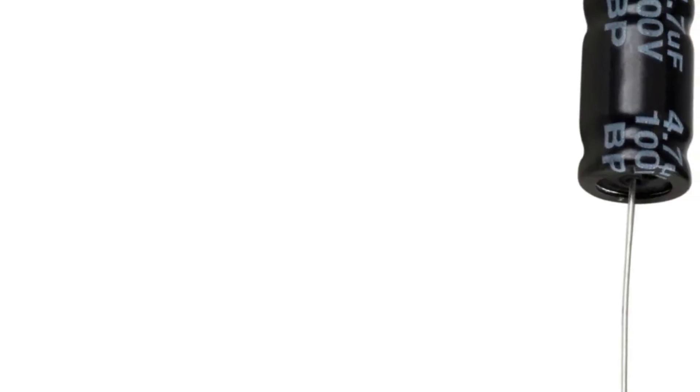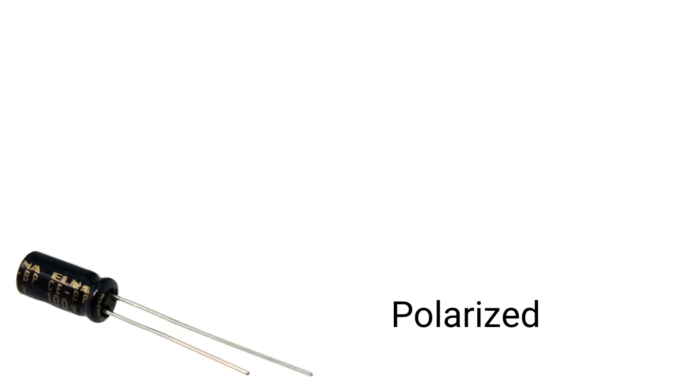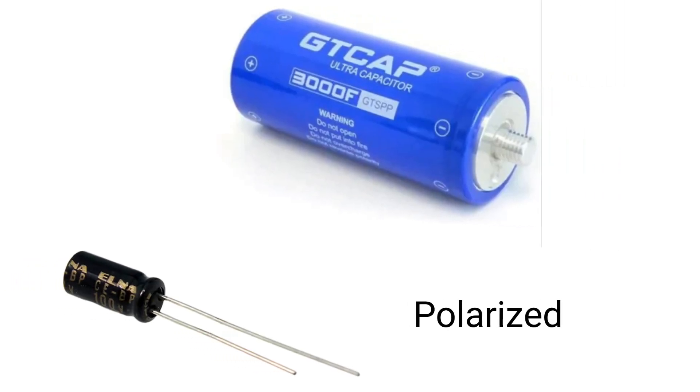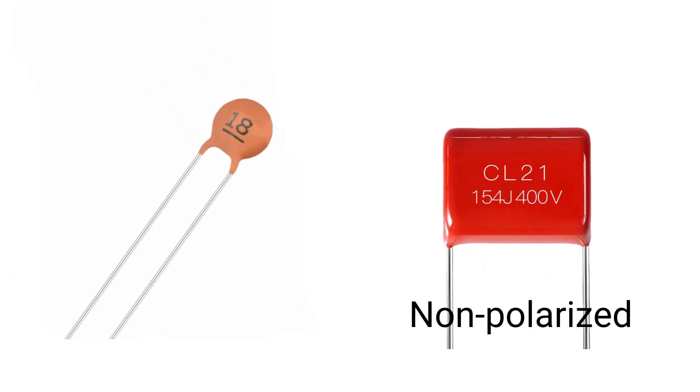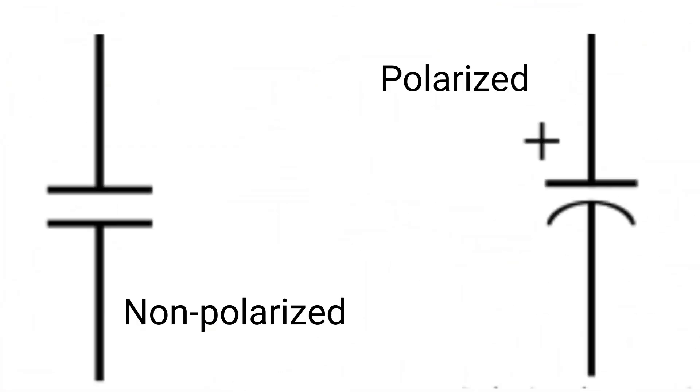There are two main types of capacitors, polarized and non-polarized. In general, polarized ones are either called electrolytic or supercapacitors. Non-polarized ones are usually either ceramic or film. Here are their schematic symbols.